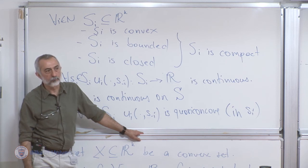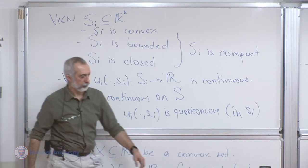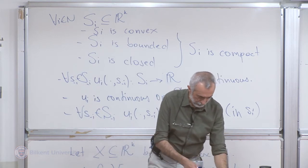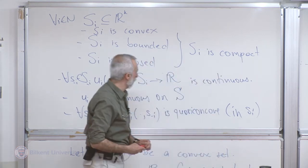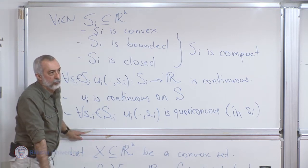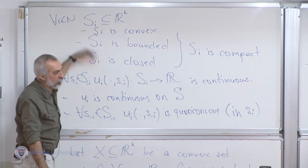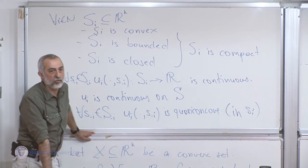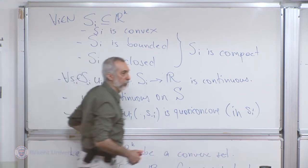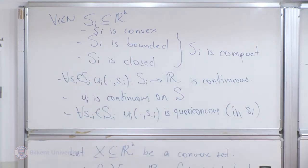So far so good? Any questions? If we restrict our attention to this set of games — games which satisfy these properties — we are guaranteed the existence of a Nash solution. Are these necessary conditions? Well, let me write the theorem and then I'll answer your question.